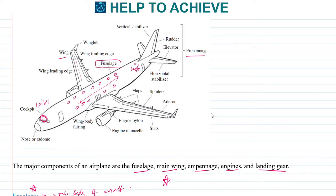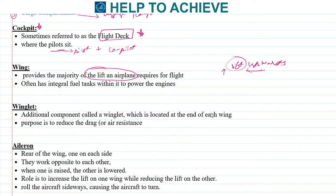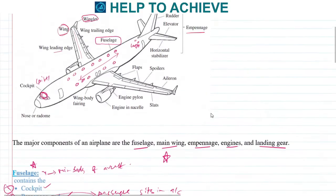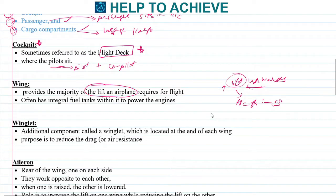The next important component is the wing. From the diagram we can see the entire wing structure, which includes winglets and leading edges. The wing provides the majority of the lift — lift is the force acting upwards on the aircraft, which allows it to fly. Wings also act as integral fuel tanks, storing fuel used to power the engines. So the two major functions of the wing are providing lift and acting as a fuel tank.